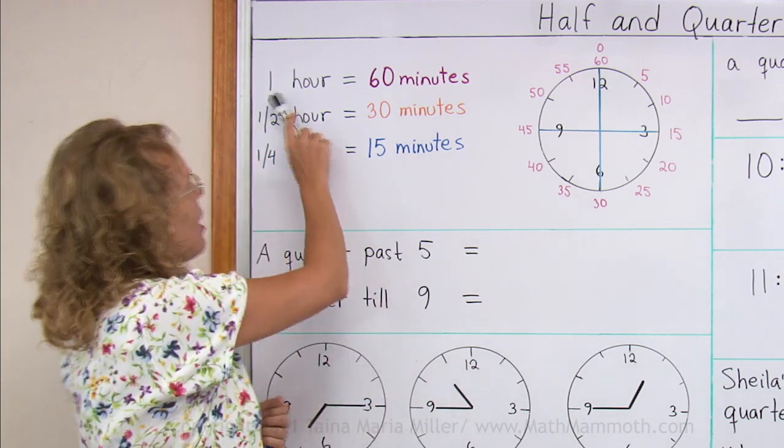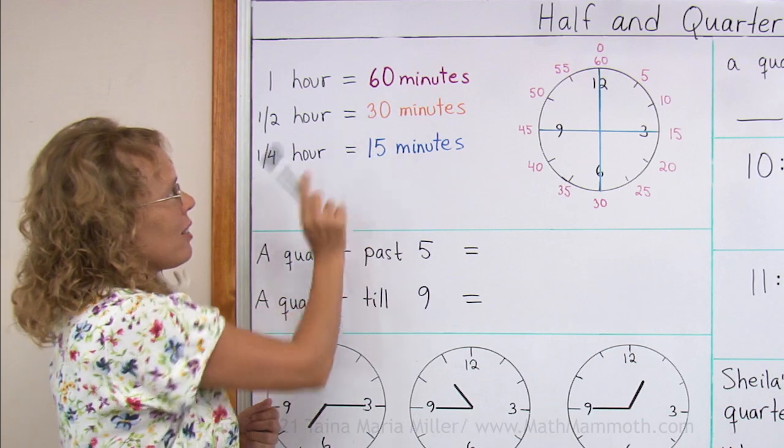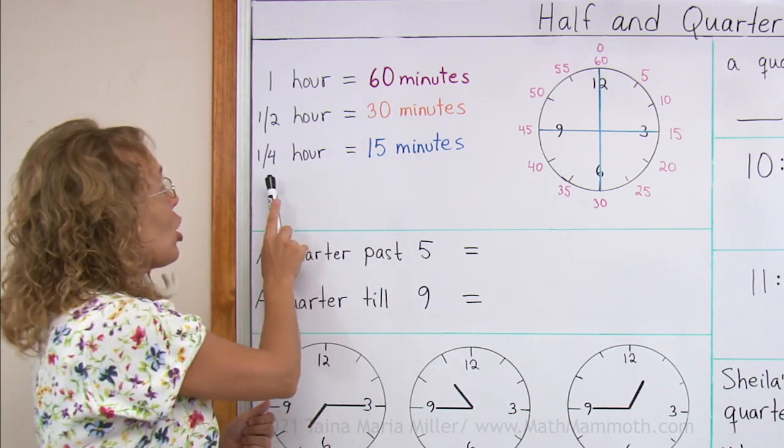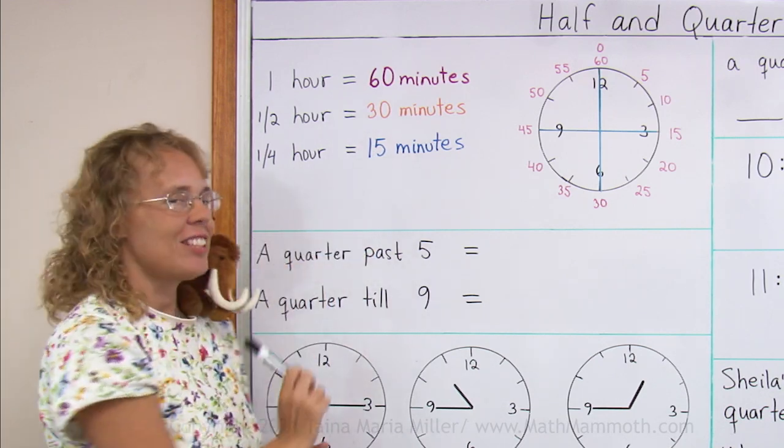And one hour being 60 minutes, half an hour being 30 minutes, then a quarter of an hour is 15 minutes.